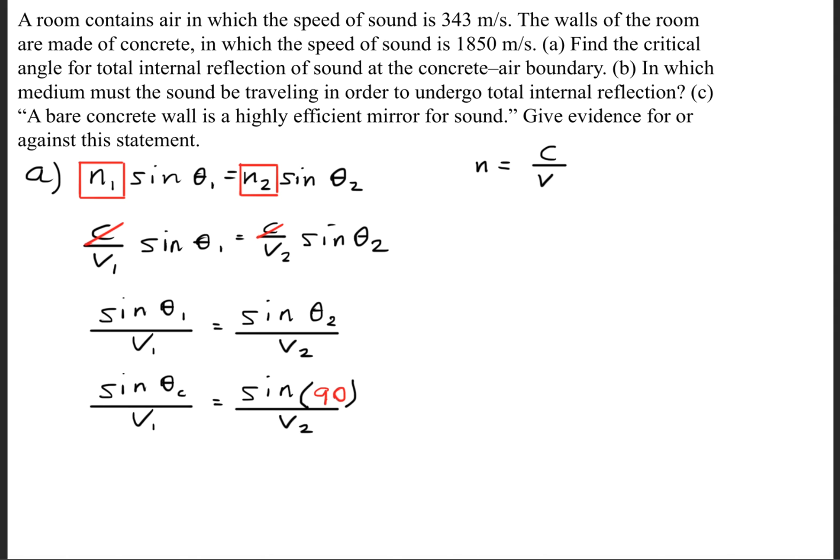Since we're dealing with total internal reflection, we'll have this first angle be what's called the critical angle, and the refracted angle theta 2 will be 90 degrees. We know that sine of 90 is simply 1, so we'll simplify this. The critical angle equals the inverse sine of the first velocity divided by the second velocity.